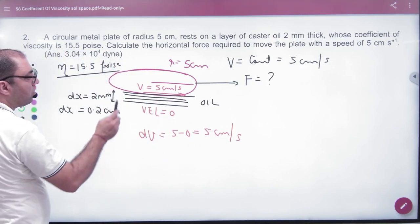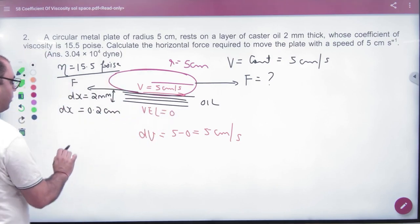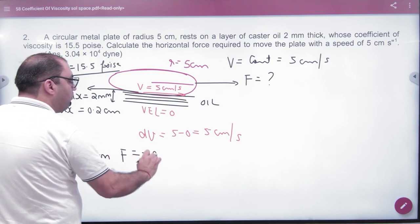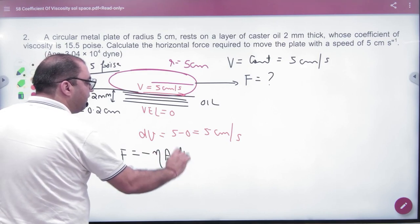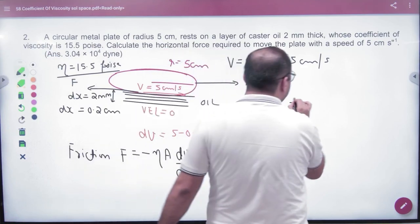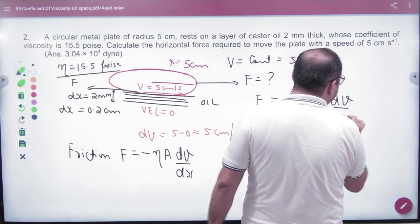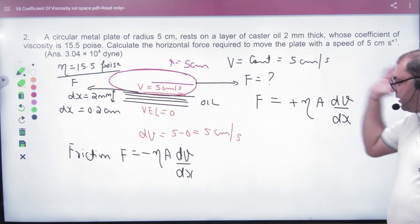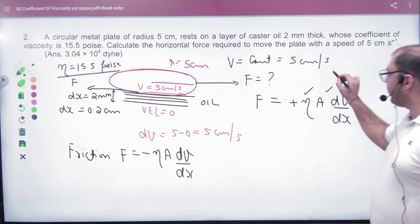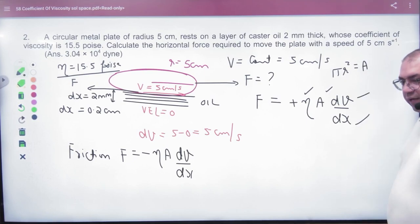What will you have applied? When you apply, what will develop here? The force. Formula: F equals minus Eta A DV by Dx. But you will add exactly friction opposite, so net force zero and velocity constant. Eta, area pi R square, DV and Dx. Solve.